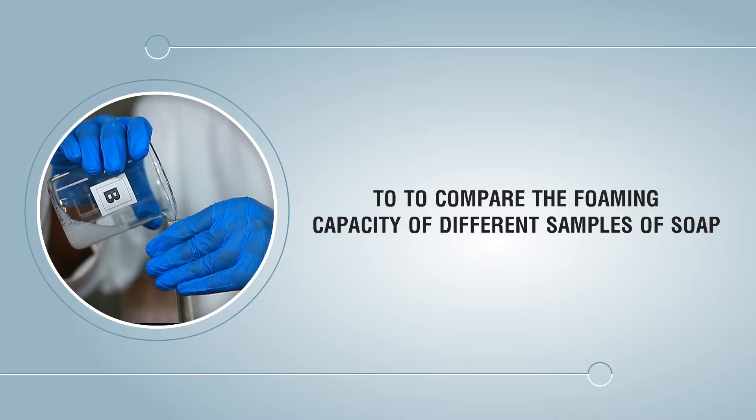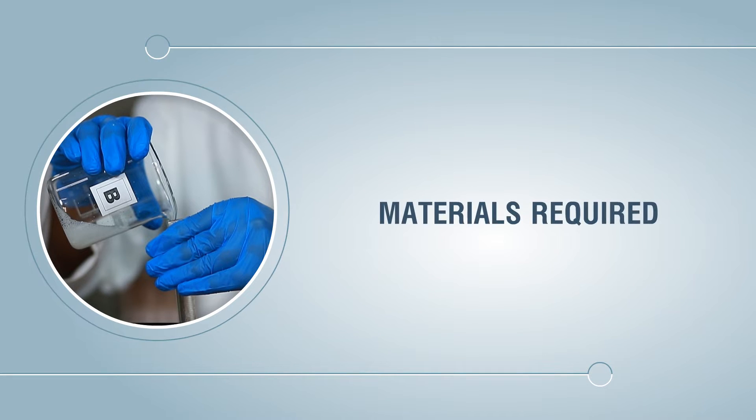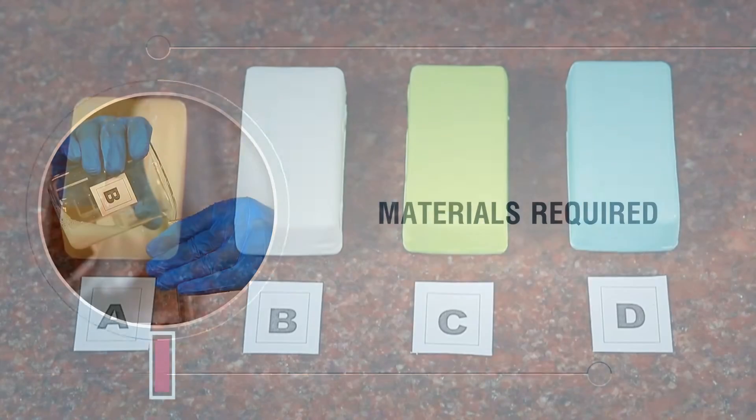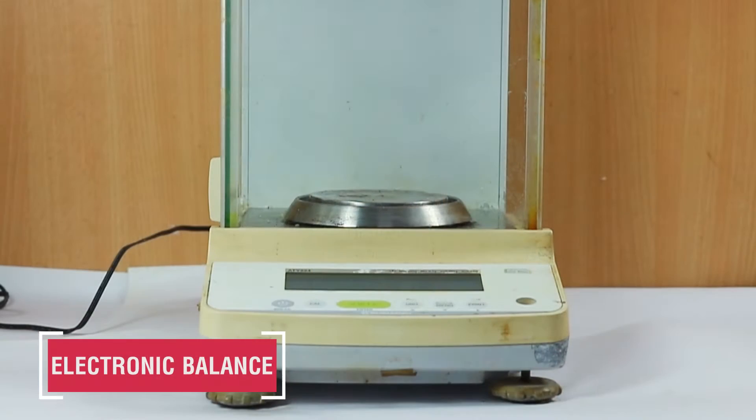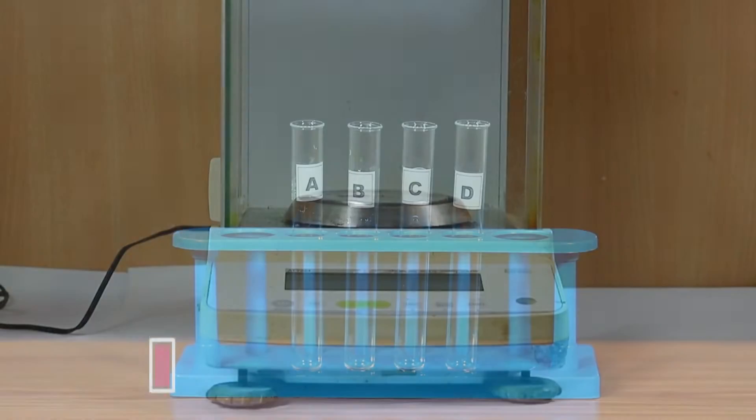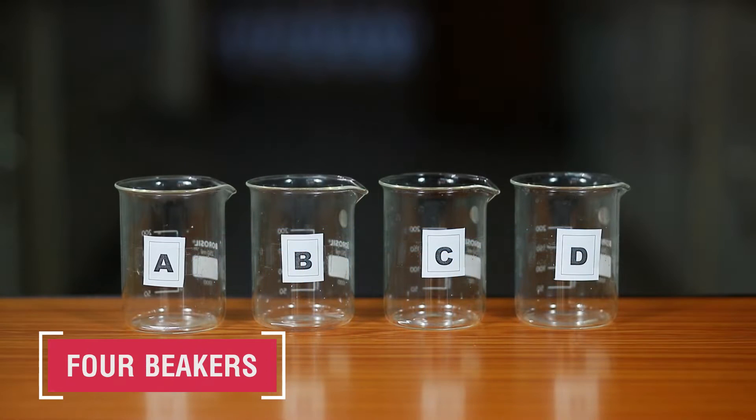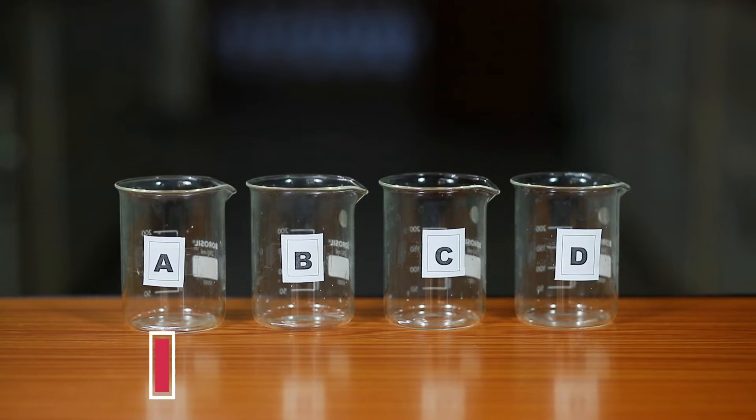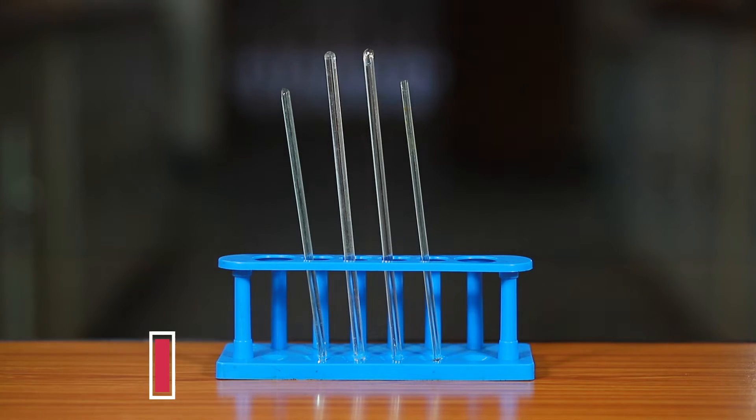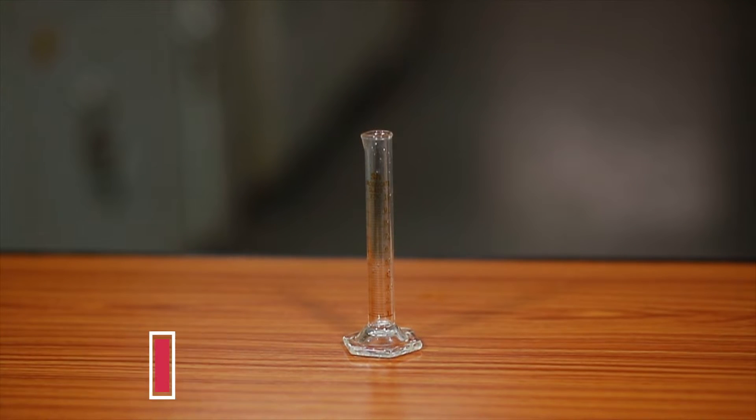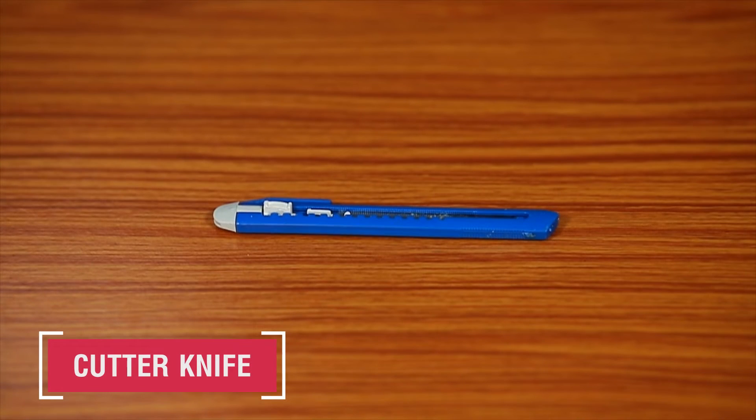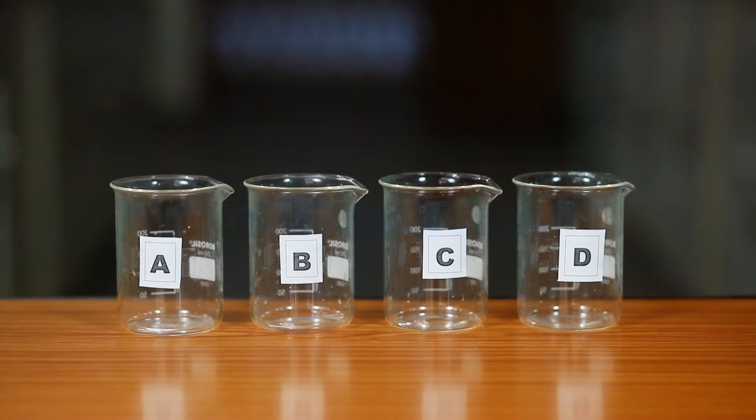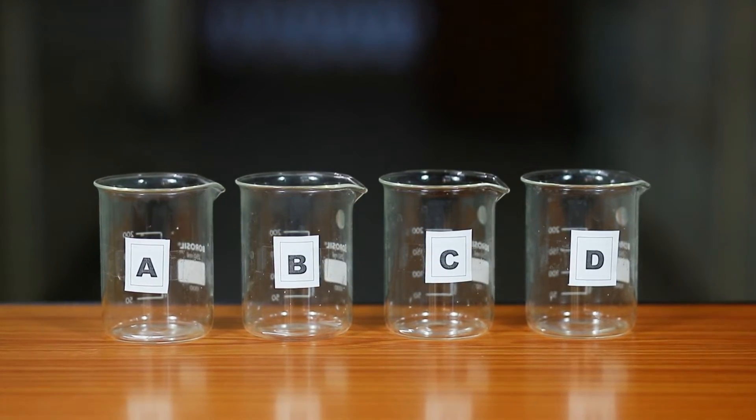To compare the foaming capacity of different samples of soap. Materials required: different samples of soap, distilled water, electronic balance, four test tubes, four 100 ml beakers, four glass rods, a measuring cylinder, a measuring scale 15 centimeters, and a cutter knife. Take four labeled 100 ml beakers.